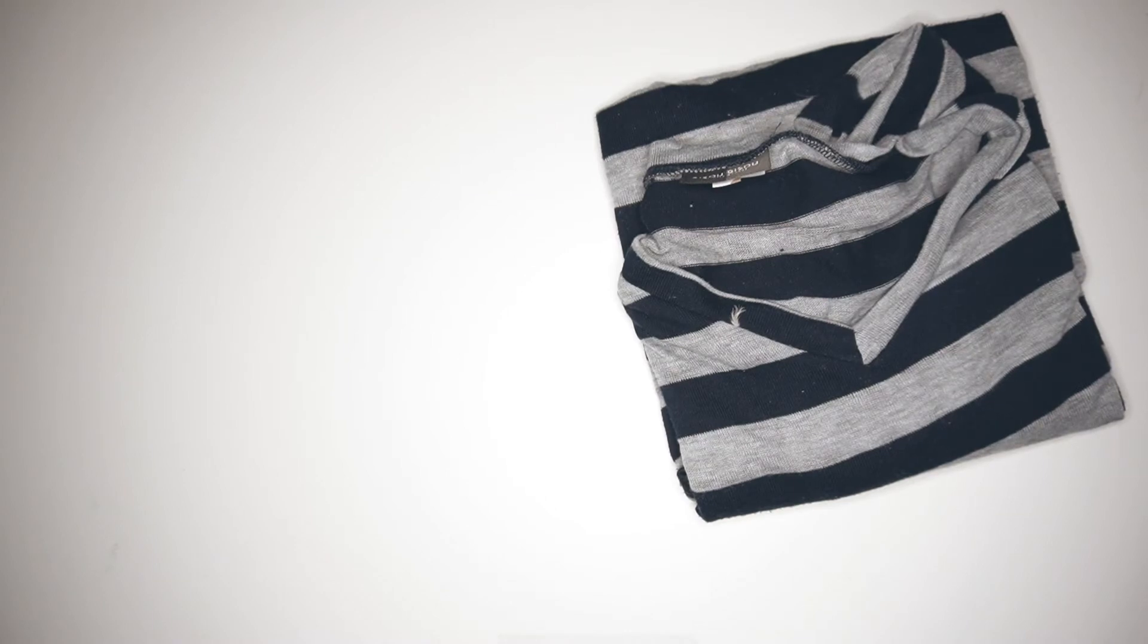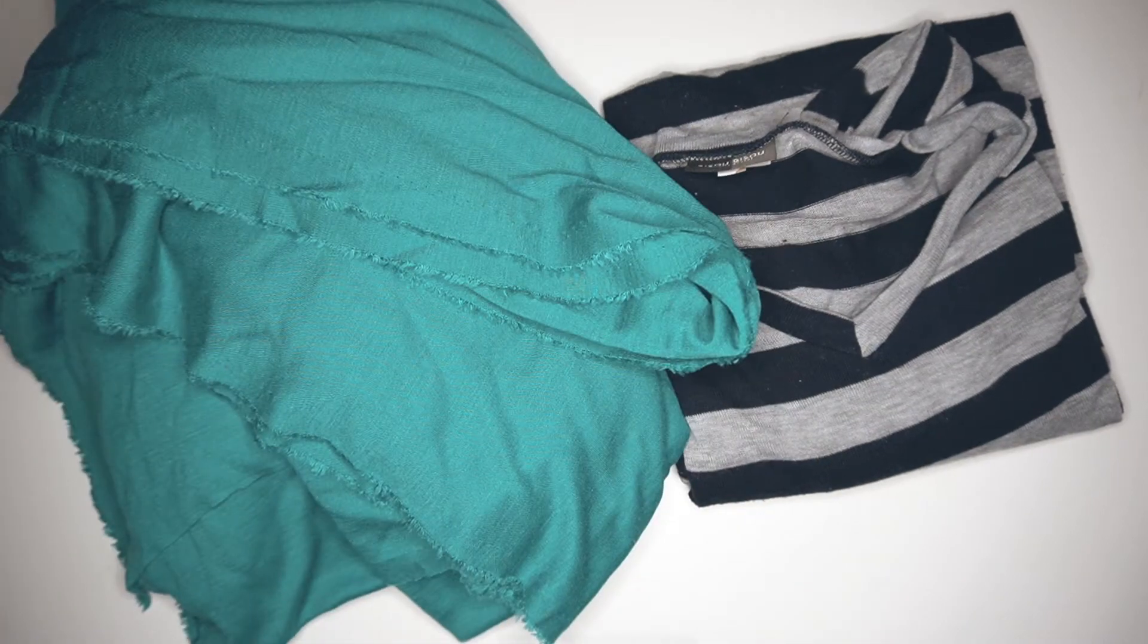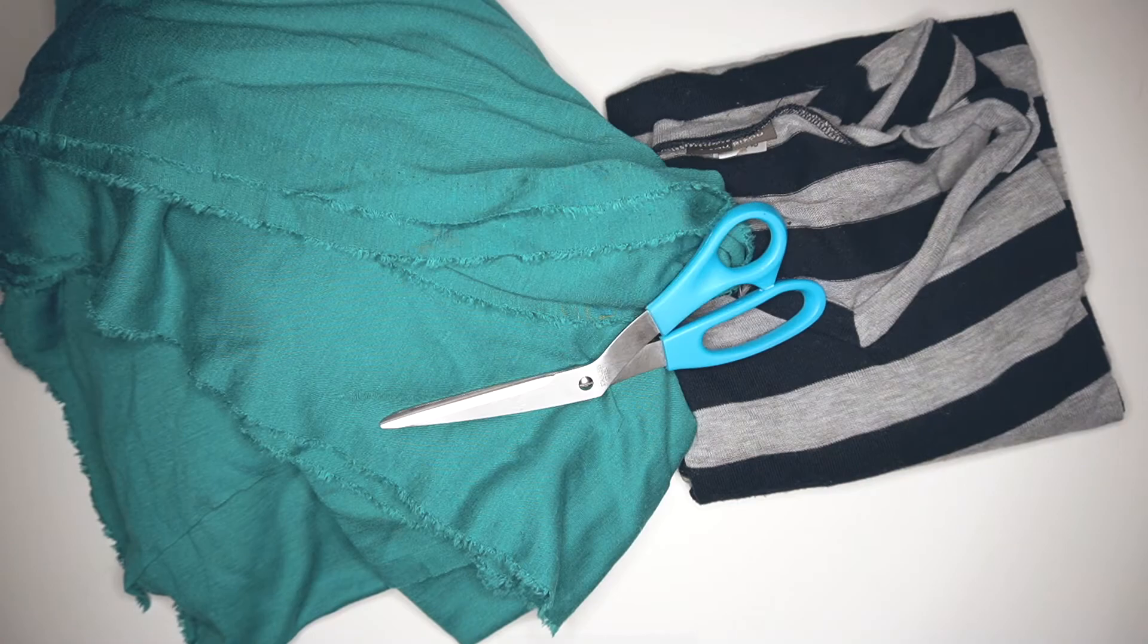This first DIY is an easy braided dog toy. This is kind of like those rope toys that you can get in the pet shop, but you can make this with old fabric that you have at home really inexpensively.